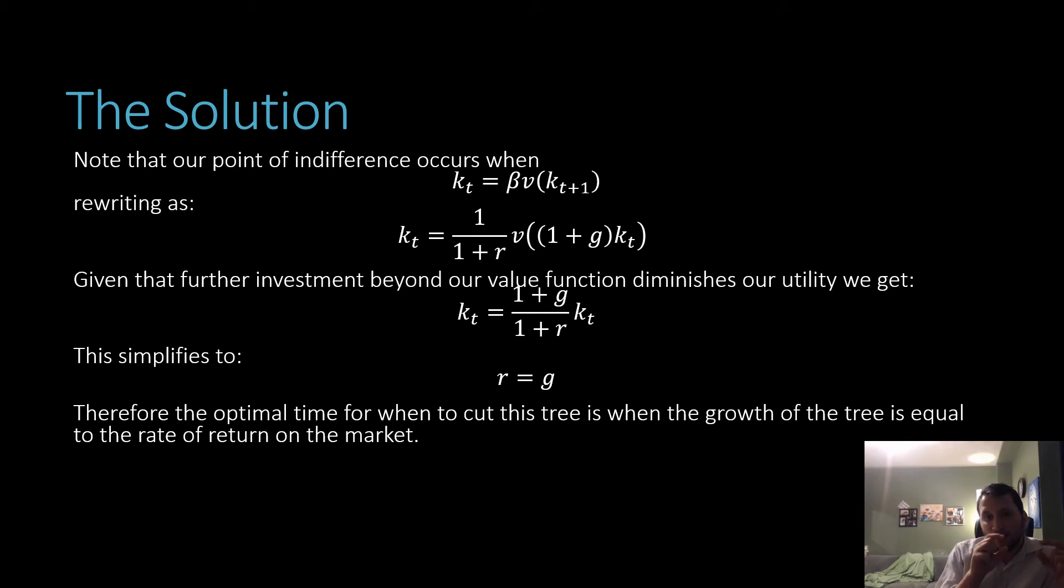And by the properties of our max function, we could change this v term into just being the value inside it directly. Why could we do that? Because that value, if we're at our point of indifference, is just going to be a lot smaller than what we have here. So this is not going to hold here.